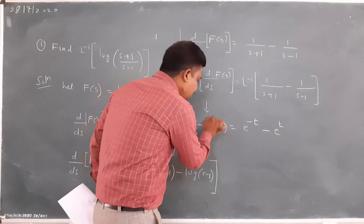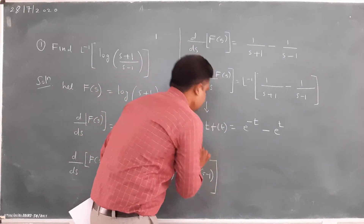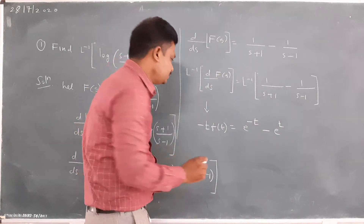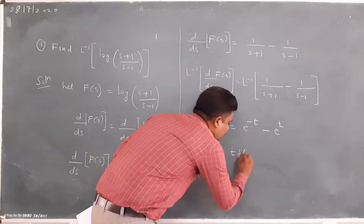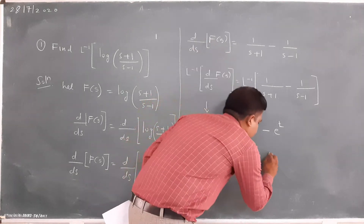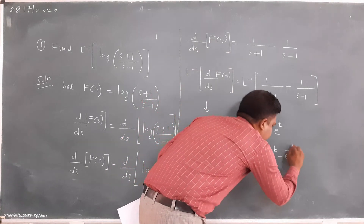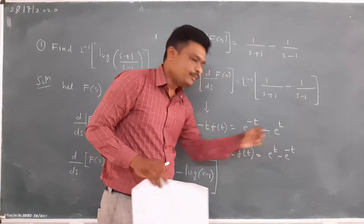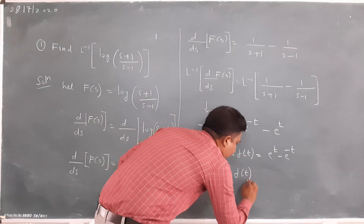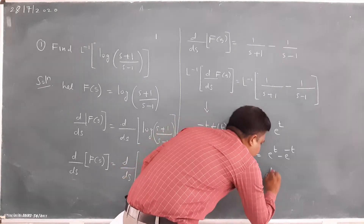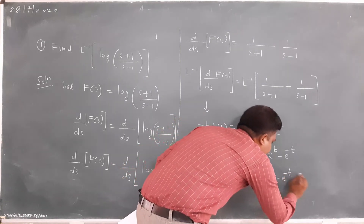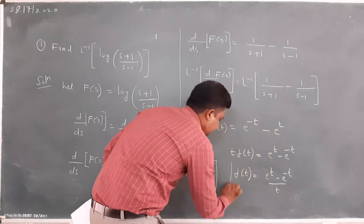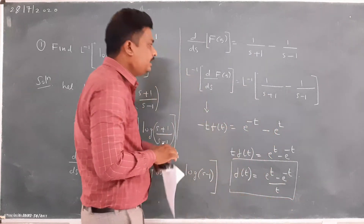So I want f(t). I will multiply minus on both sides: t · f(t) = e^t − e^(−t). So therefore f(t) = (e^t − e^(−t)) / t.